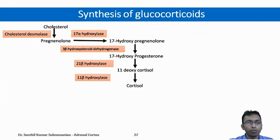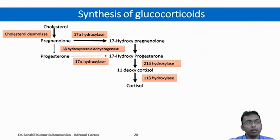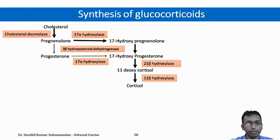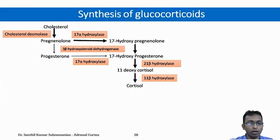This is the glucocorticoid synthesis pathway. There is also a secondary pathway for the synthesis of cortisol: cholesterol is converted to pregnenolone, which instead of moving to 17-hydroxypregnenolone can be converted directly to progesterone. From progesterone, by the action of 17-alpha-hydroxylase, it can be converted into 17-hydroxyprogesterone, but this is the less common pathway.